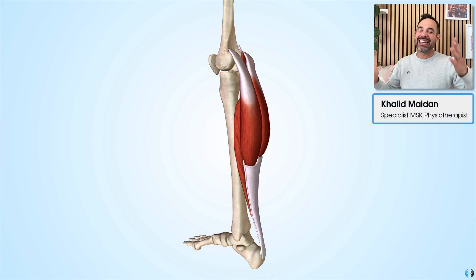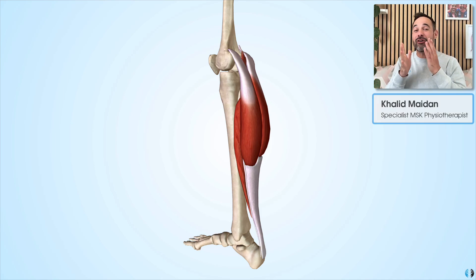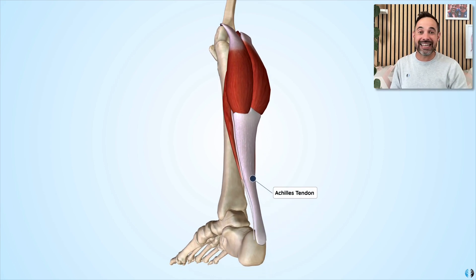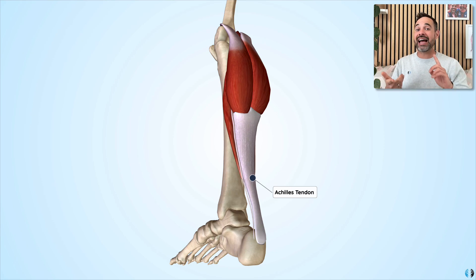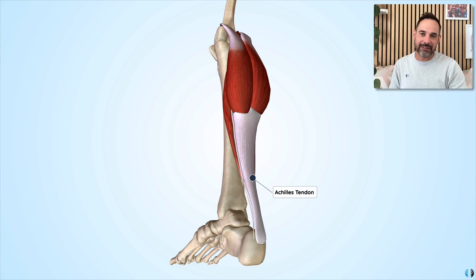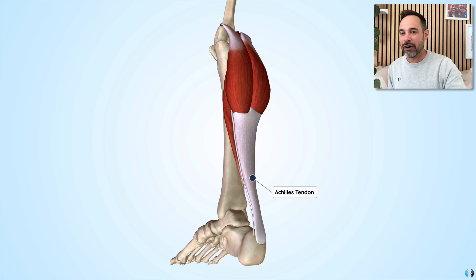Hey everyone, Khalid here. Welcome back to Clinical Physio. Today we're talking about a really important soft tissue structure in the lower leg, which is the Achilles tendon. In this video, we're going to talk about the anatomy of this tendon, as well as clinical conditions such as Achilles tendinopathy and Achilles tendon ruptures, and how they're relevant to the anatomy of the Achilles tendon. Let's start with the anatomy itself.